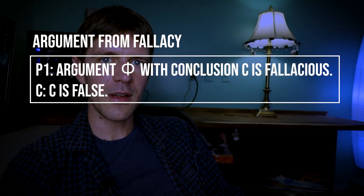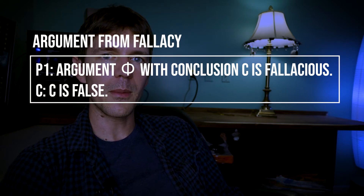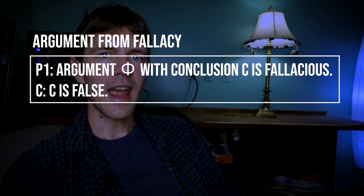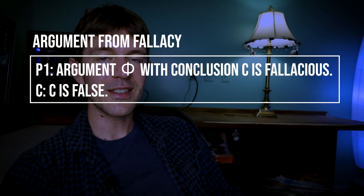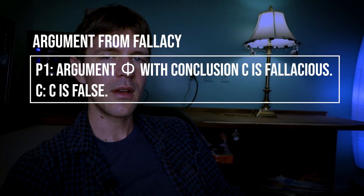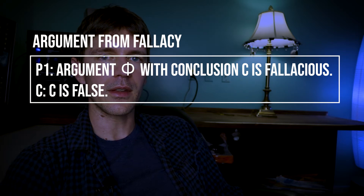The form of this argument is as follows: we have an argument, that argument has a conclusion, and that argument commits a fallacy. So the first premise identifies an argument, points out its conclusion, and notes that the argument is fallacious. Then we reason to the conclusion that the conclusion of that fallacious argument is false. But this argument is invalid — the premise can be true and the conclusion can be false. That is, we can have fallacious arguments with true conclusions.